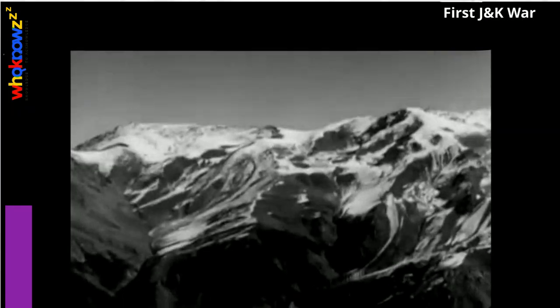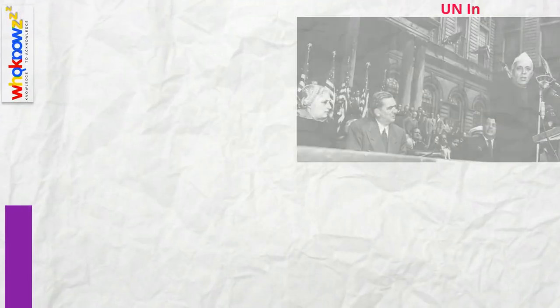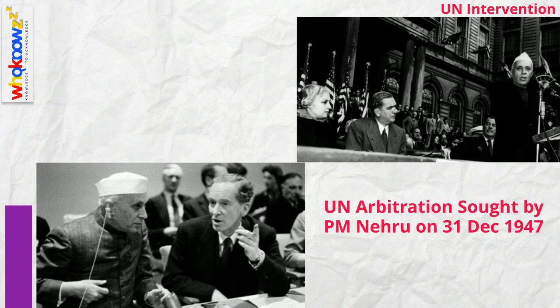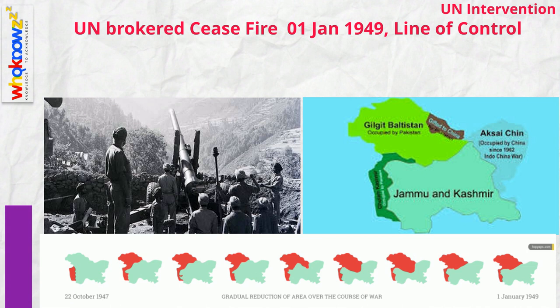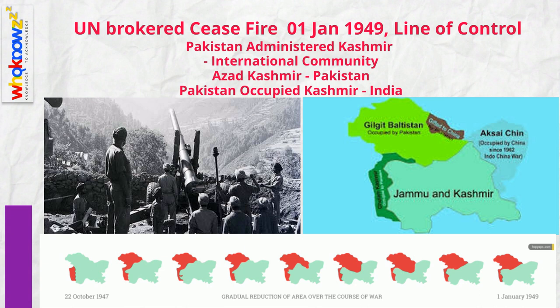The intense fighting flagged with the onset of winters, making much of the state inaccessible. Prime Minister Nehru, recognizing the degree of international attention brought to bear on the dispute, sought UN arbitration and agreed to a plebiscite condition brought about by the ensuing UN resolutions. On 31st December 1948, ceasefire was declared, and on 1st January 1949, the line of control came into being. India did not, however, secure administrative control over all of Kashmir. The northern and western portions came under Pakistan's control in 1947 and are today called Pakistan-administered Kashmir by the international community, Azad Kashmir by Pakistan, and Pakistan-occupied Kashmir by India.